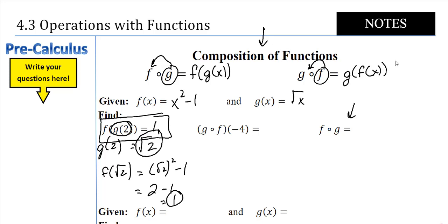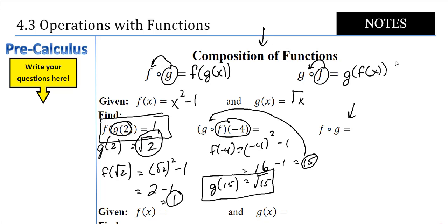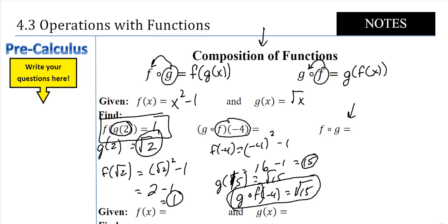Now G of F of negative 4. I take the inside piece first: F of negative 4 is negative 4 squared minus 1. Make sure you plug the negative number into the parentheses with the squared — otherwise you'll get negative 16 and it'll be wrong. That equals positive 16 minus 1, which is 15. Then I plug 15 into G: G of 15 equals the square root of 15. So G of F of negative 4 is equal to the square root of 15.